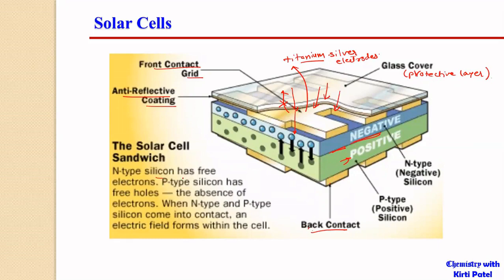When sun rays fall on the solar cell, the electrons absorb the sun rays' energy and go into the conduction band. As they go into the conduction band, they cross the PN junction and move into the P-type semiconductor, because P-type has holes where electrons can be accommodated.